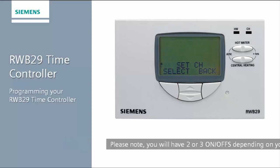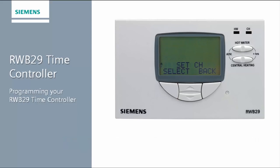You will see the words set and CH on the screen. For this example, we will change the central heating only and press select.